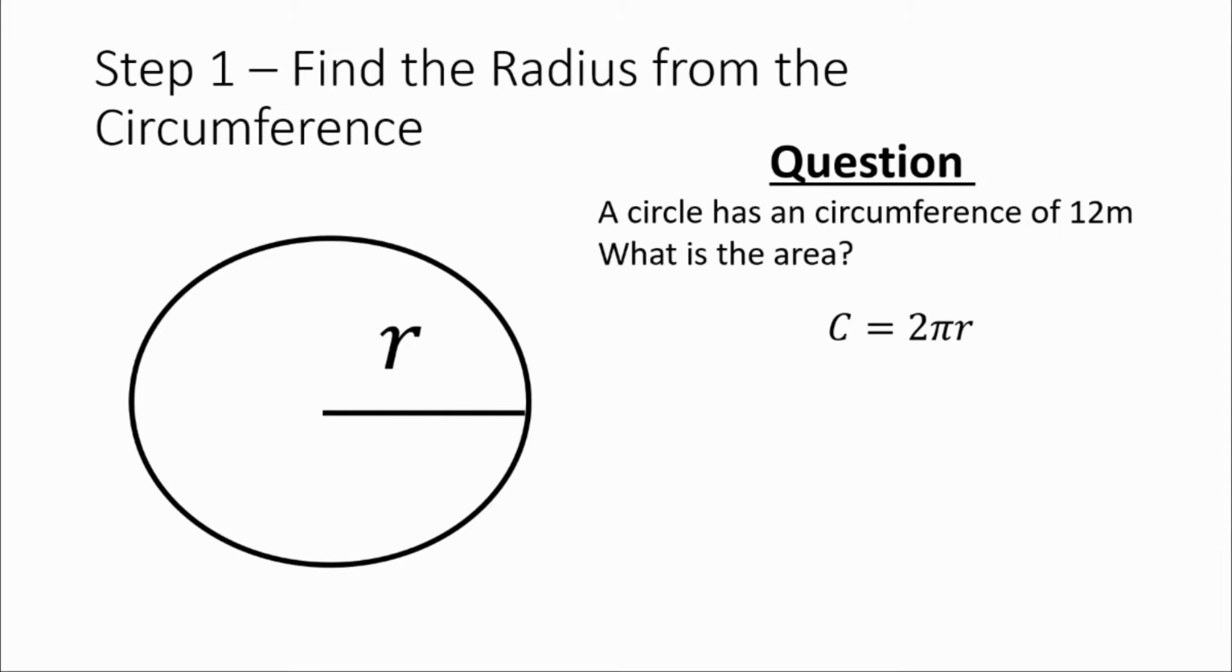We want to find the radius, so we need to divide both sides of the equation by 2π to get r on its own. So let's divide both sides by 2π. And that gives us that the radius is equal to the circumference divided by 2π.